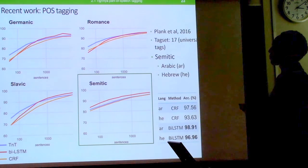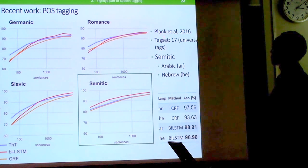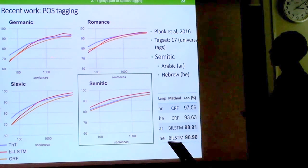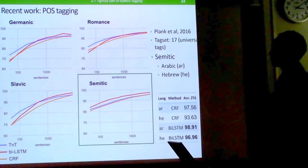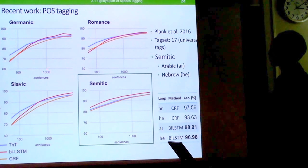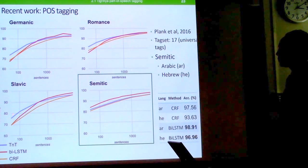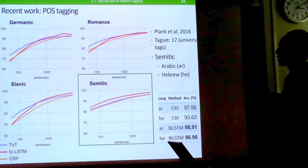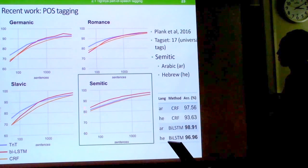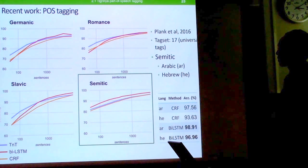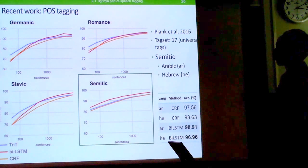Looking at recent work on POS tagging by Planck et al., which compares HMM-based TNT, wireless TM method, and CRF across language groups in a low-resource scenario of about 1,000 sentences — TNT performed better for most language groups. However, for Semitic languages such as Arabic and Hebrew, BiLSTM performed better even in this low-resource scenario, suggesting that methods effective for other languages do not necessarily work for Semitic languages.